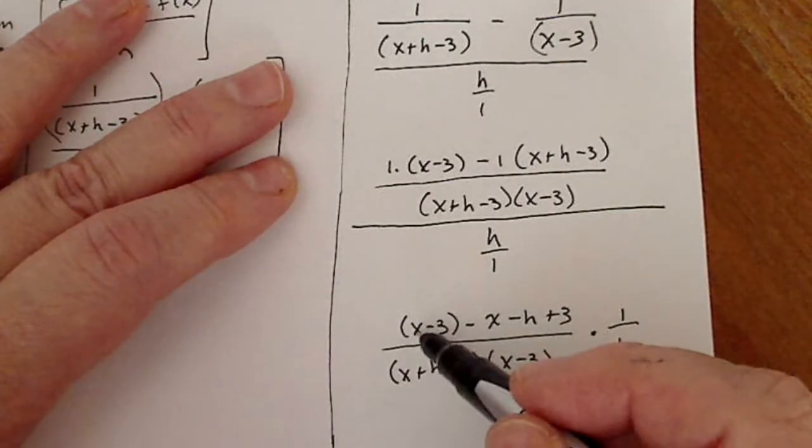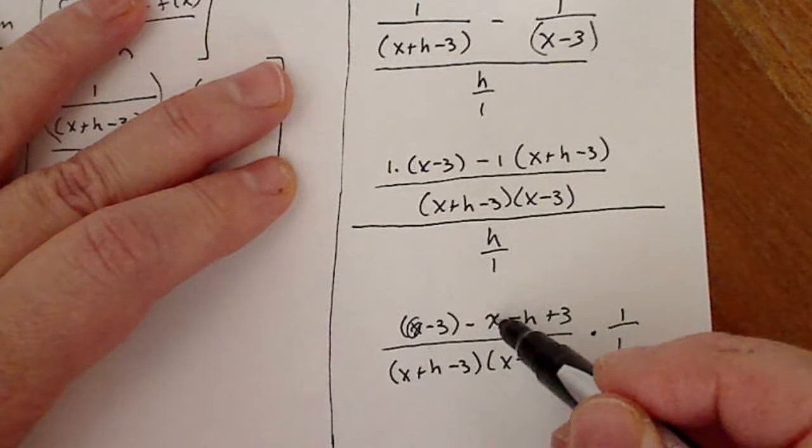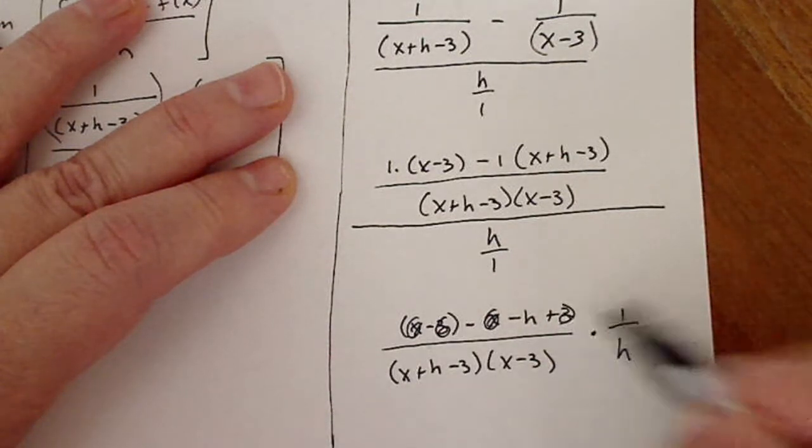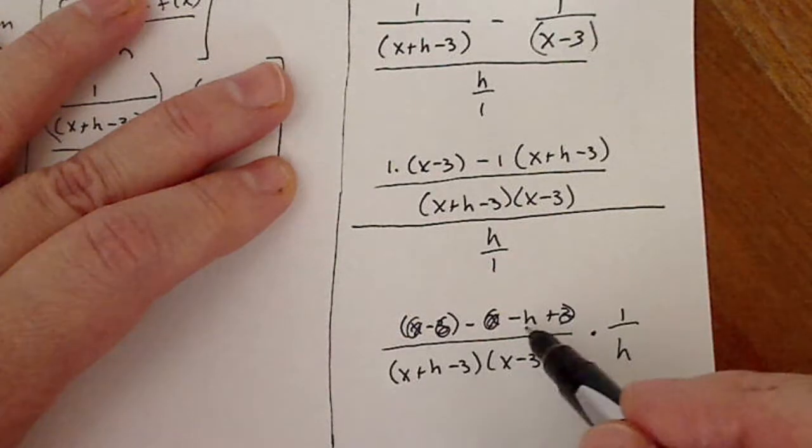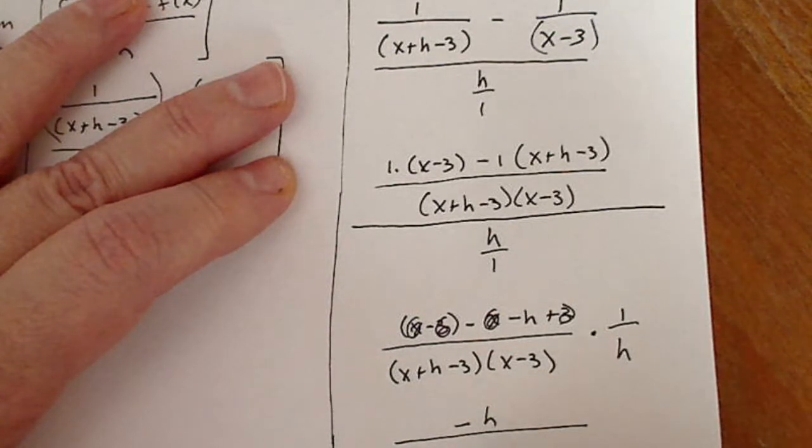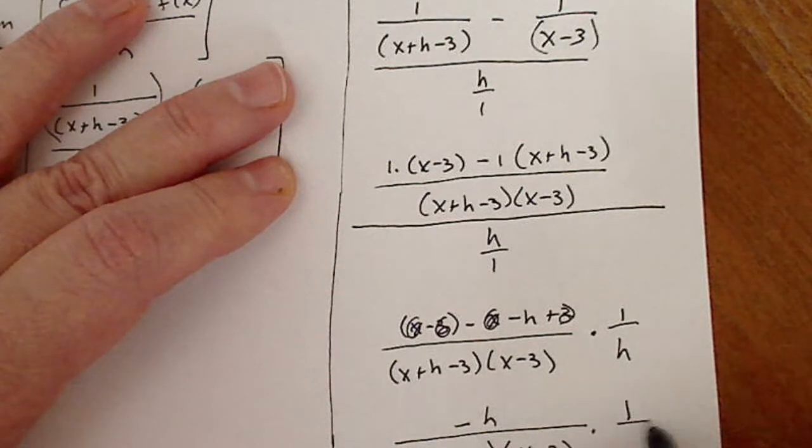In the numerator we see this lovely. I can get rid of that x with that x. I can get rid of that negative three with that positive three. And so in the numerator I'm left with a negative h.